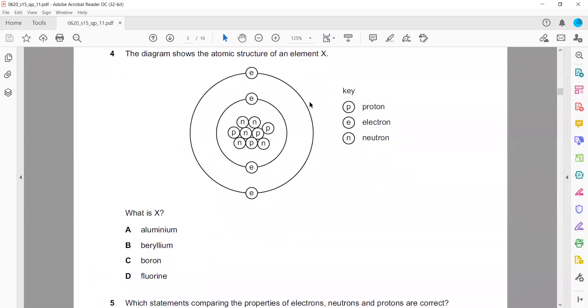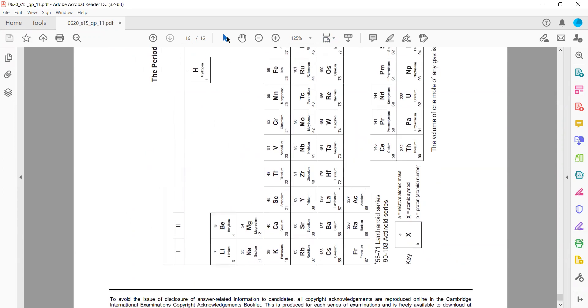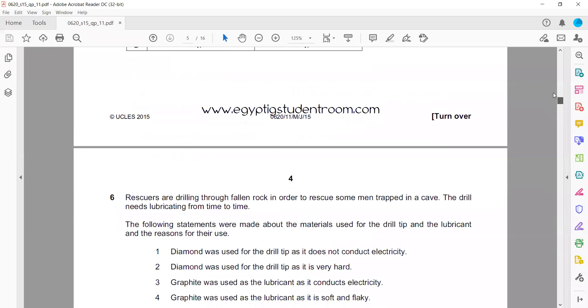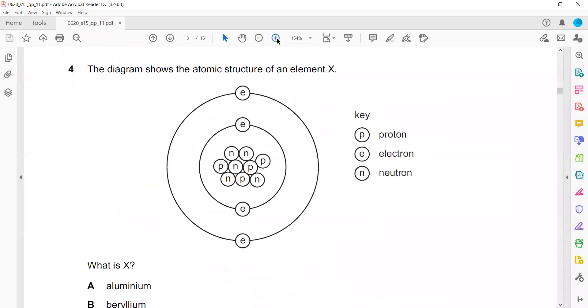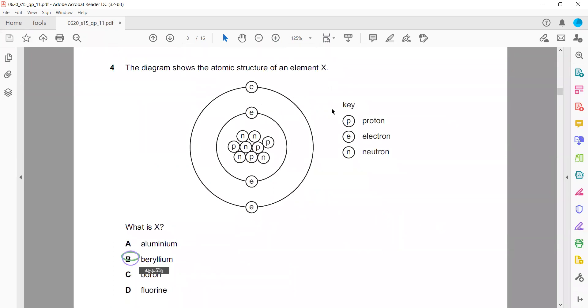The diagram shows atomic structure of an element. How to identify the element? You can identify the element from proton number. How many protons are there? One, two, three, and four. So this element is having four protons. In the periodic table, we'll check an element which is having four protons. When you check the element with four protons, that is beryllium.